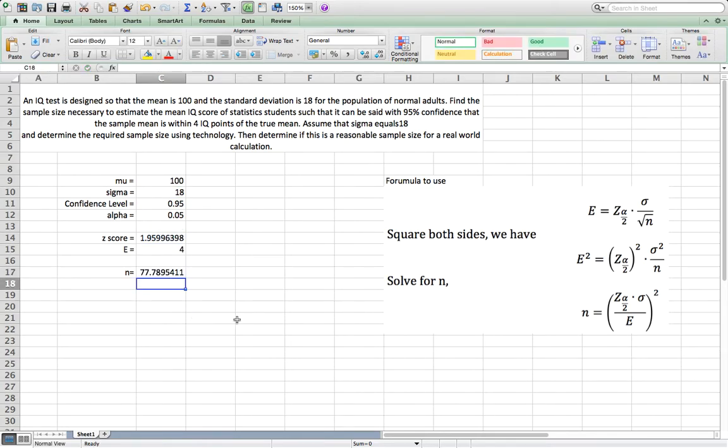That gives me 77.78. So of course, we need to round it up. We round it up as an integer, because sample size cannot be a fraction. So we always round it up, so we have 78.